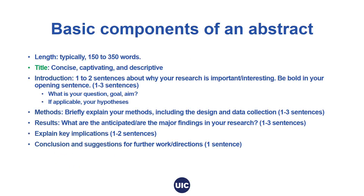The structure of a good abstract can typically be broken down into the following six basic components. Note that a conference abstract is typically 150 to 350 words long. First, you want to provide a descriptive and captivating, yet concise title for your project. Next, you should write a one to two sentence introduction about why your research is important. Be bold in your opening sentence, but stay focused on the specificities of your project from the first sentence.